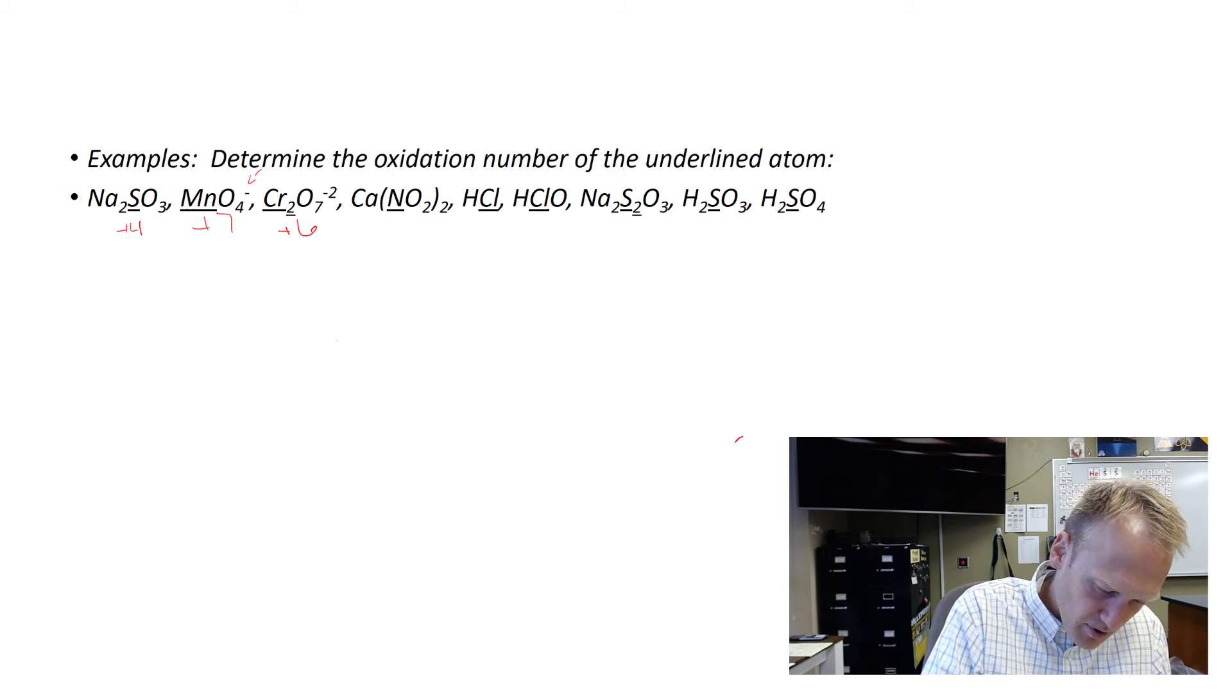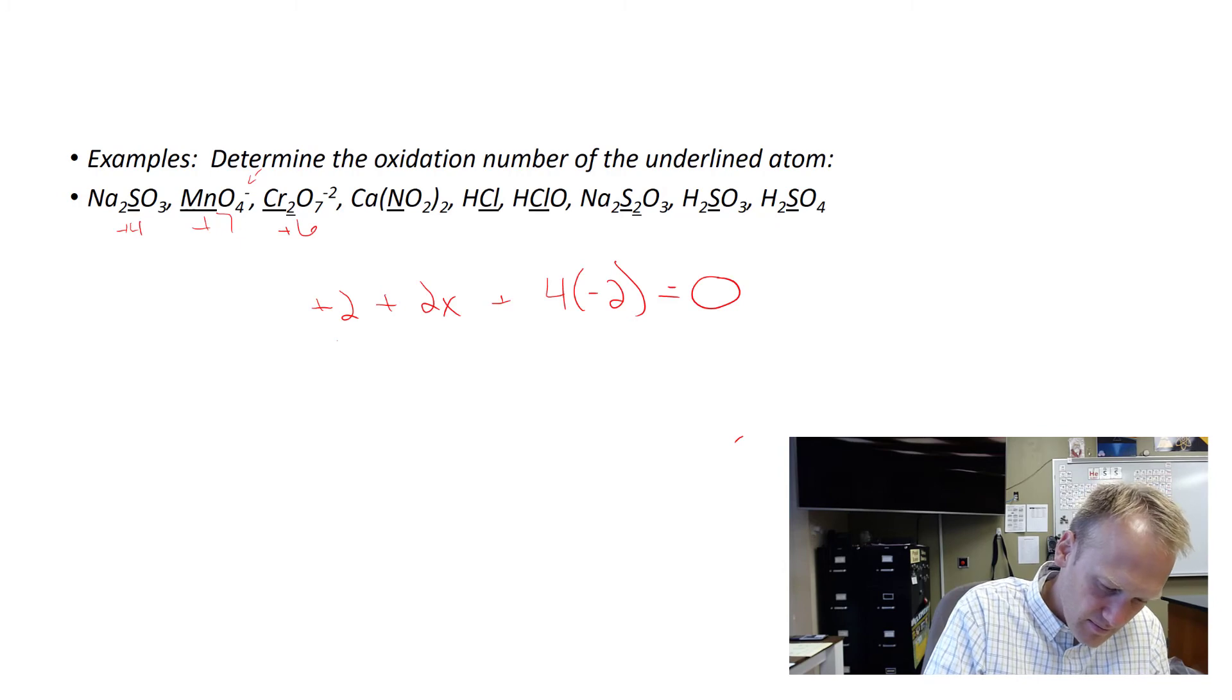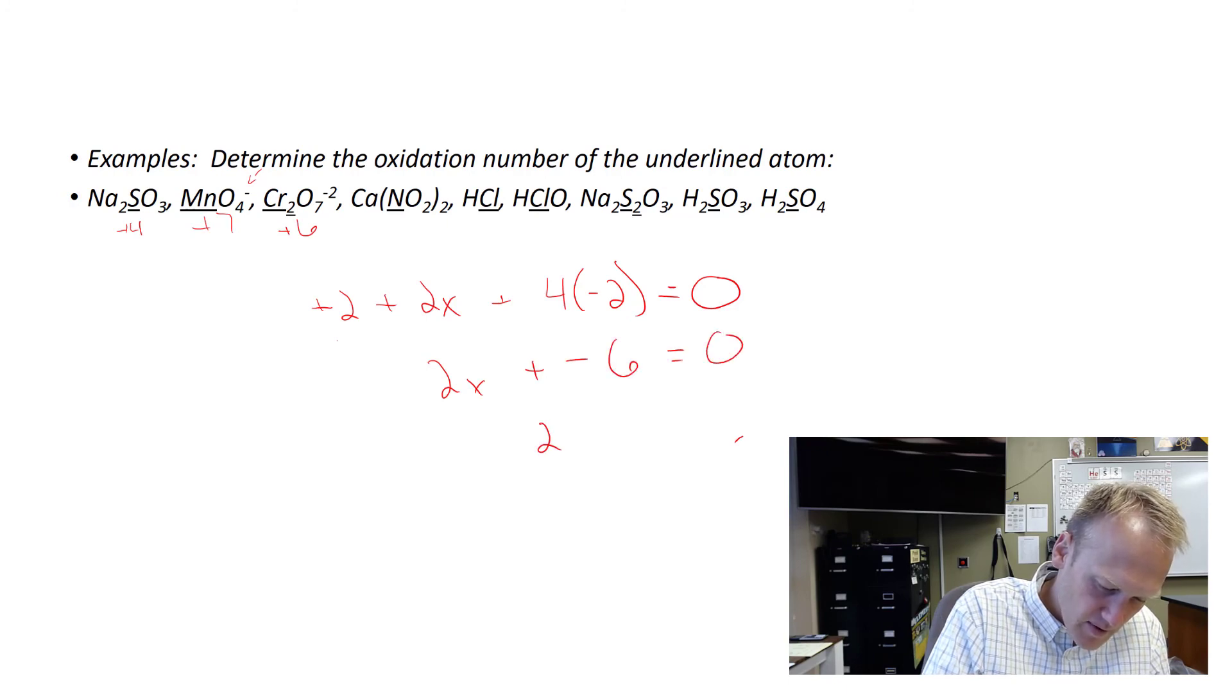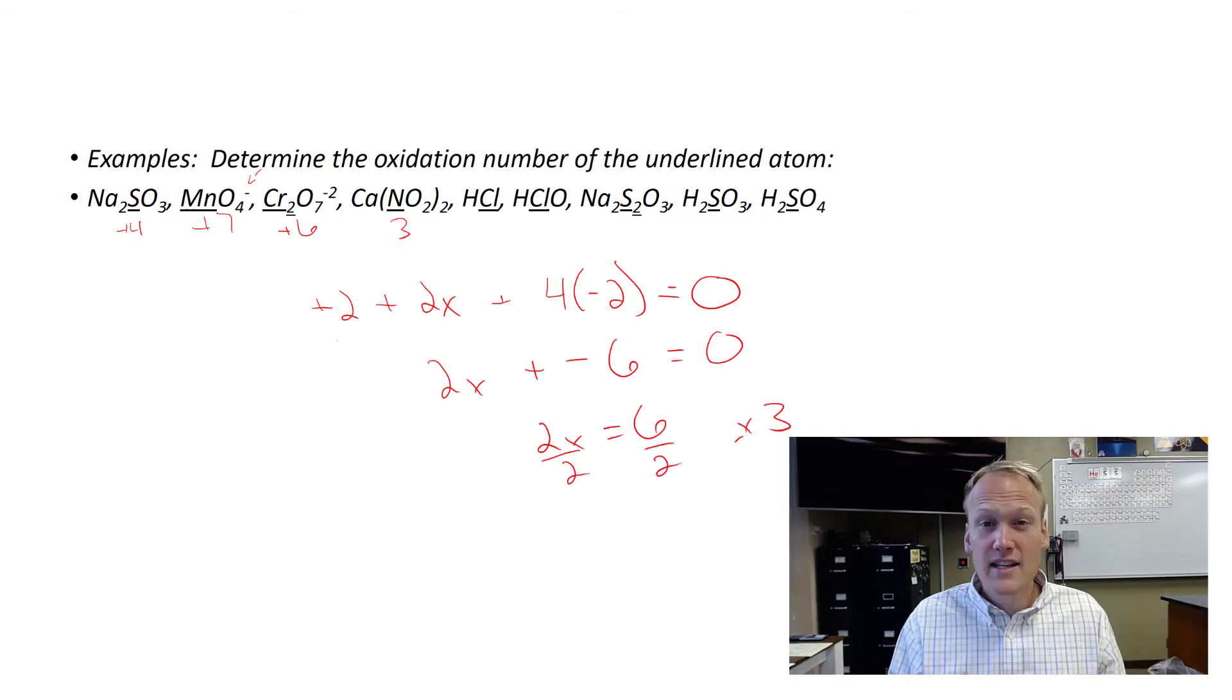This next one's a little tricky. We have calcium, which is a plus 2. We have 2 nitrogen, so 2x. And then we have 4 oxygen because 2 times 2 is 4 oxygen. This one is neutral, so we're going to set it equal to 0. So we get 2x plus negative 6 equals 0. Then we get 2x equals 6. Divide by 2, and x would equal 3.